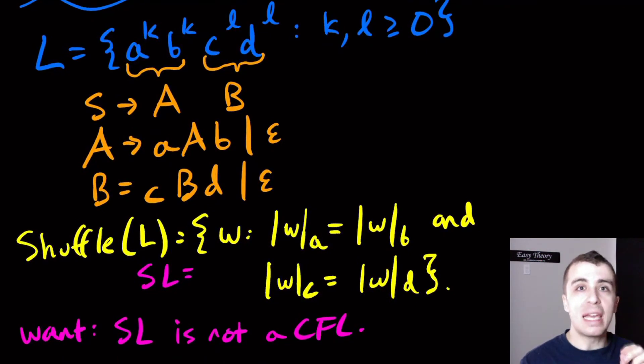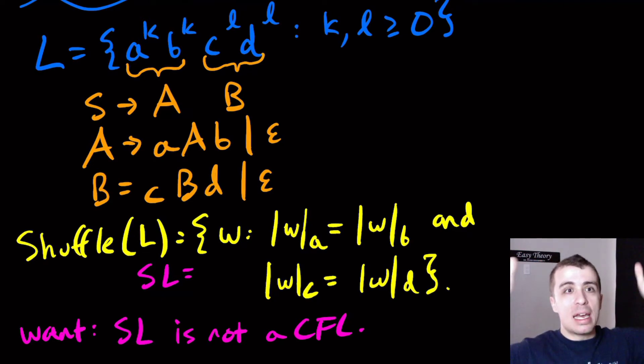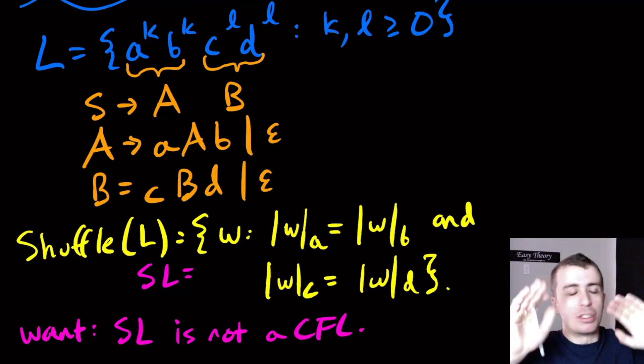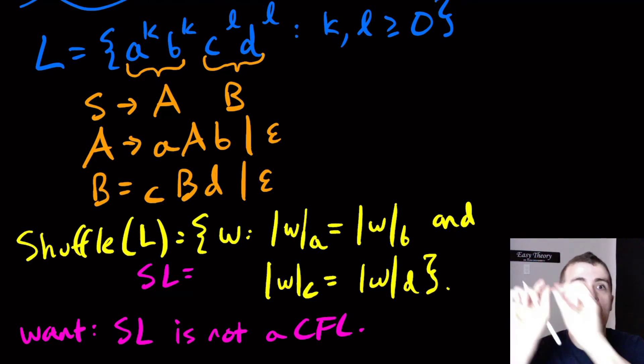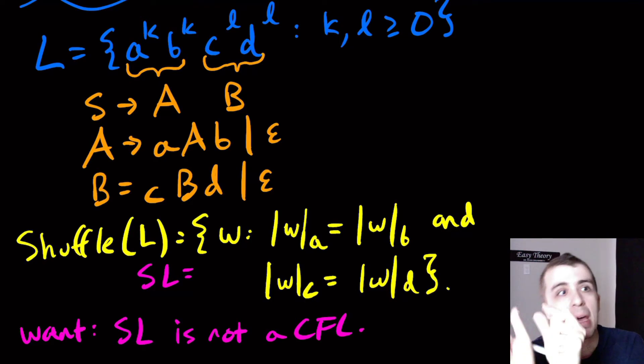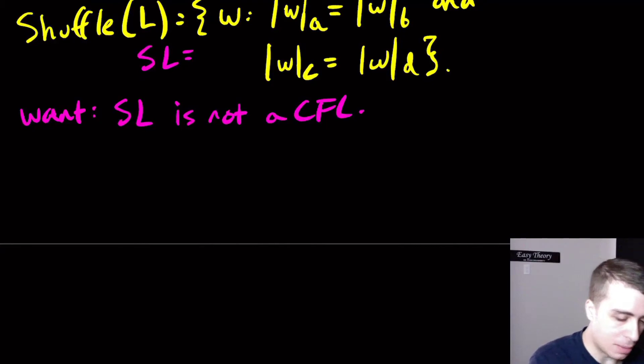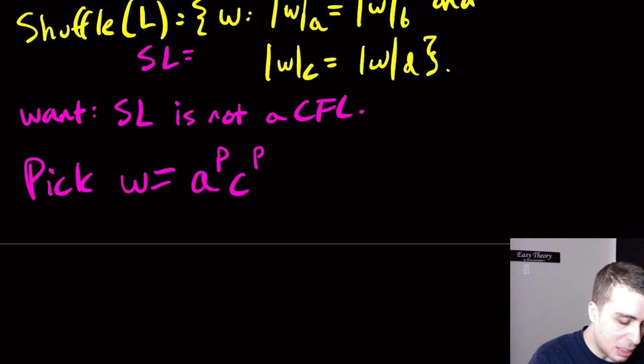The trick here is to have interleaved pairs of runs of characters. Instead of a's and b's at the end and c's and d's in the middle, because you can show that's also context-free, I'm going to have a's and c's first because they may have different counts and then b's and d's have different counts possibly. Let's pick the string w equal to a to the p, c to the p, b to the p, d to the p.